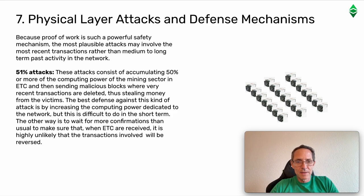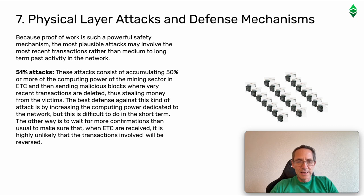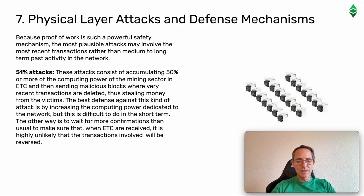Physical layer attacks and defense mechanisms. Because proof-of-work is such a powerful safety mechanism, the most plausible attacks may involve the most recent transactions rather than medium-to-long-term past activity. 51% attacks consist of accumulating 50% or more of the computing power of the mining sector in ETC and then sending malicious blocks where very recent transactions are deleted, thus stealing money from the victims. The best defense is increasing the computing power dedicated to the network, though this is difficult in the short term. The other defense is to wait for more confirmations than usual to ensure that received ETC transactions are highly unlikely to be reversed.